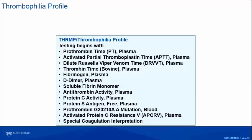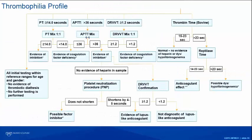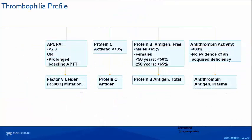For APC resistance — a protein-based test — we do reflexive Factor V Leiden testing if indicated. Our thrombophilia profile includes testing for lupus anticoagulant. We'll talk about APC resistance, protein C, and protein S. For protein C and antithrombin, we initially perform activity assays. If normal, we stop. If abnormal, we do the antigenic assay to classify. For protein S, we initially do a free antigen and then total, and very rarely do the S activity, which I'll explain.